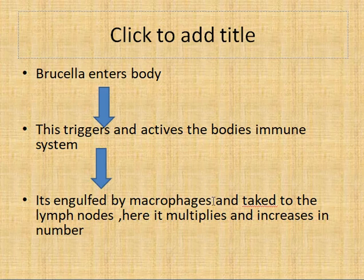The engulfing comes as an instinct for defense in order to defend the body, but the macrophages will not be aware that they cannot destroy the Brucella, because it will produce toxins against the phagocytes. After engulfing, it also produces a coat around itself which protects it from the digestive activity of lysosomes produced by the phagocytes. The coccobacilli, which is the bacteria Brucella, then starts multiplying inside.